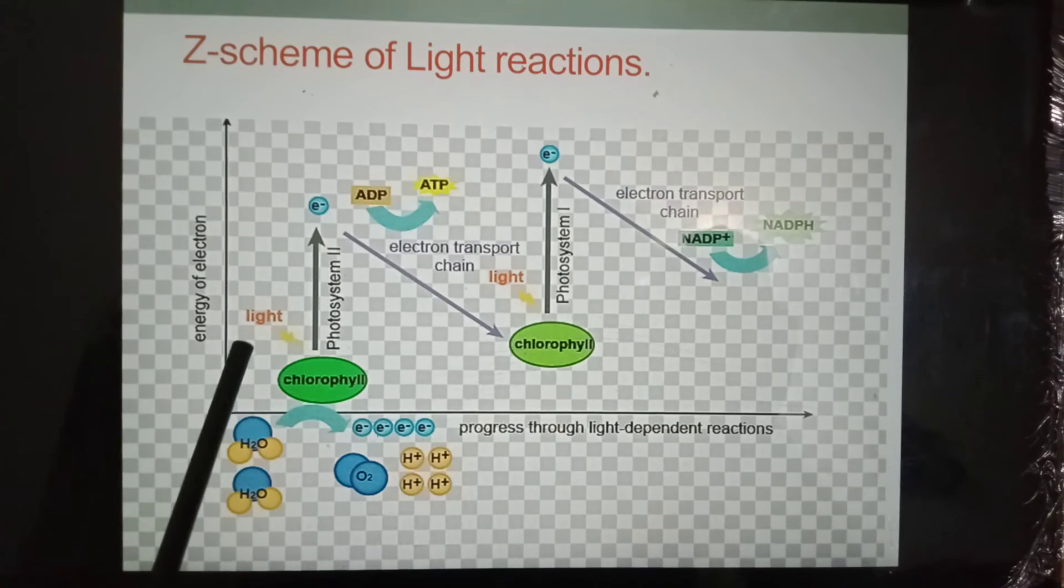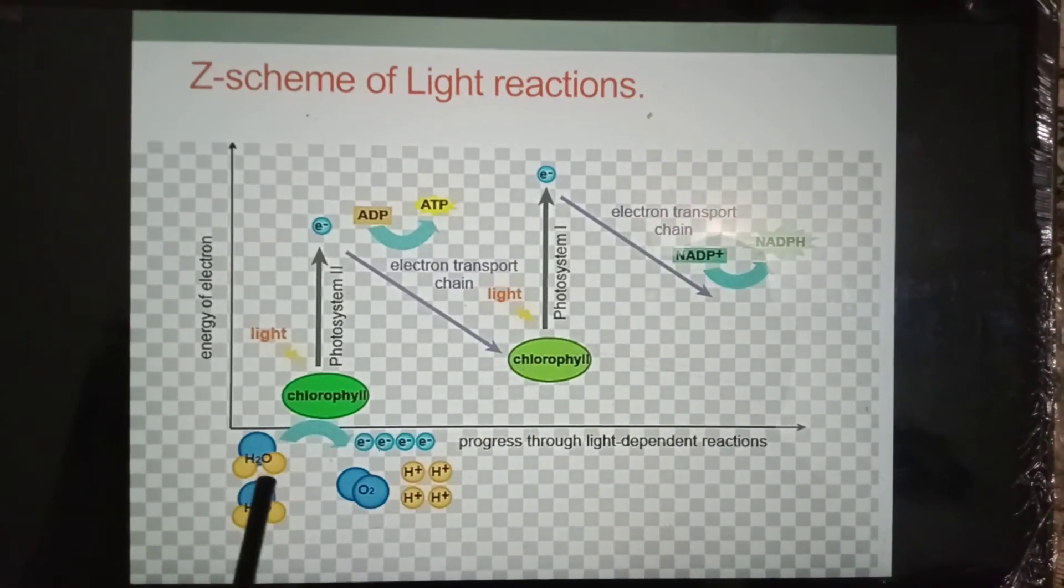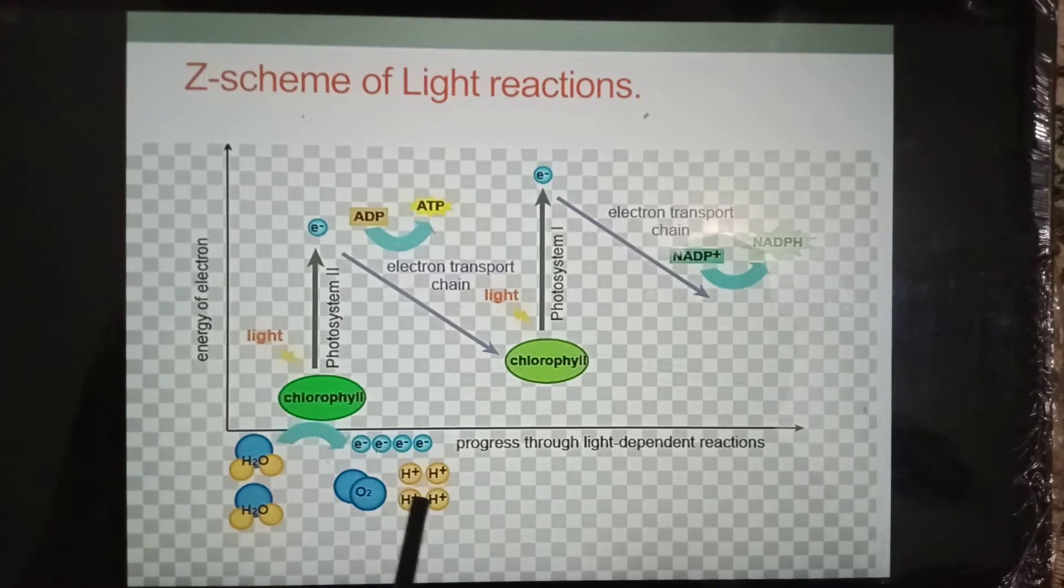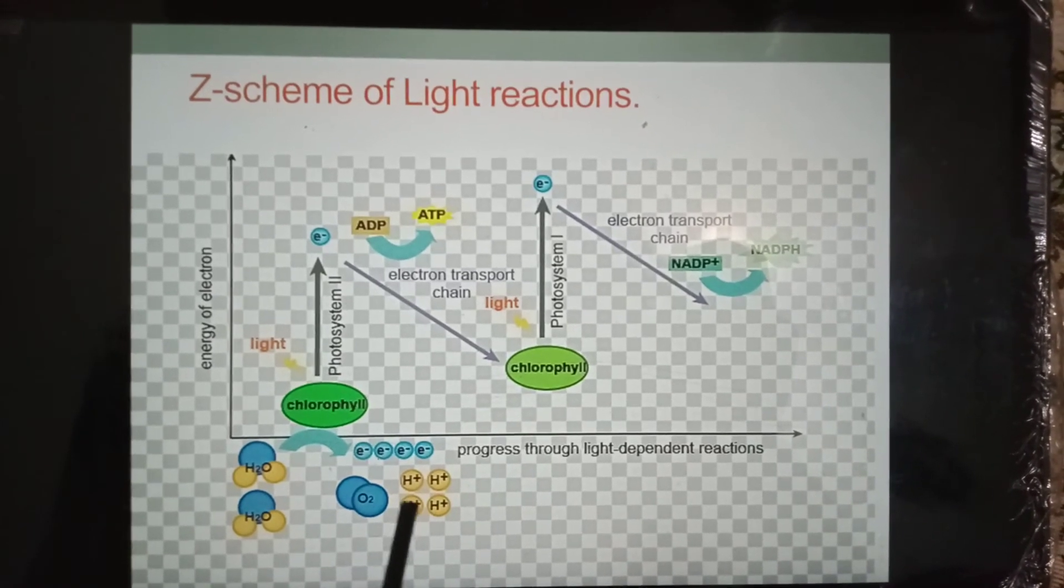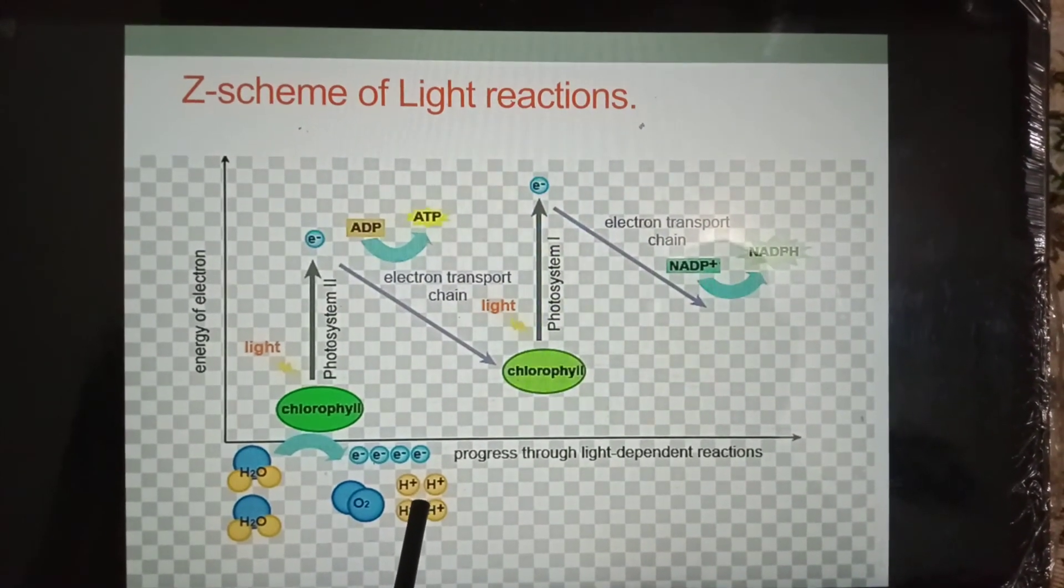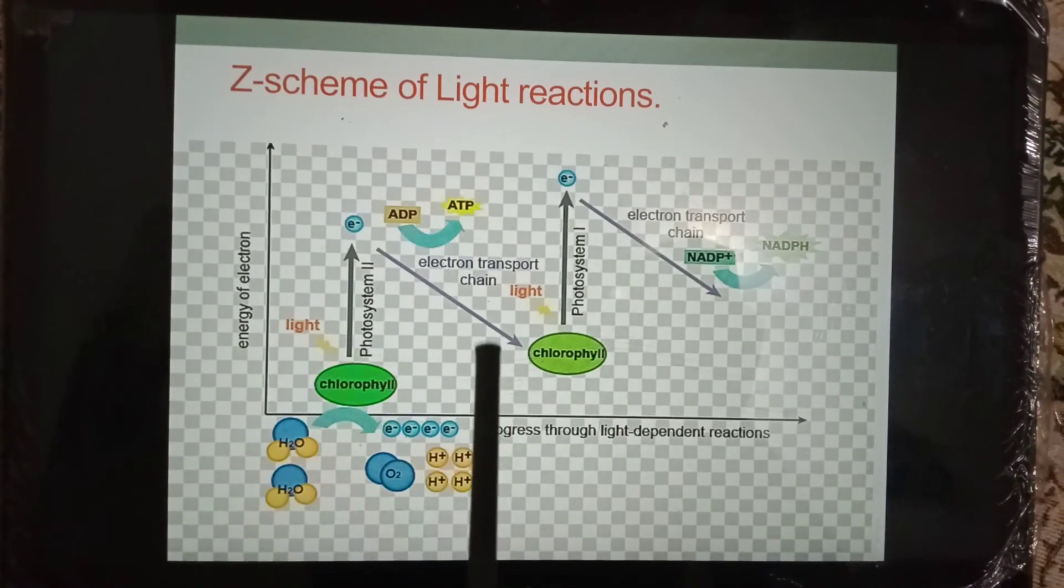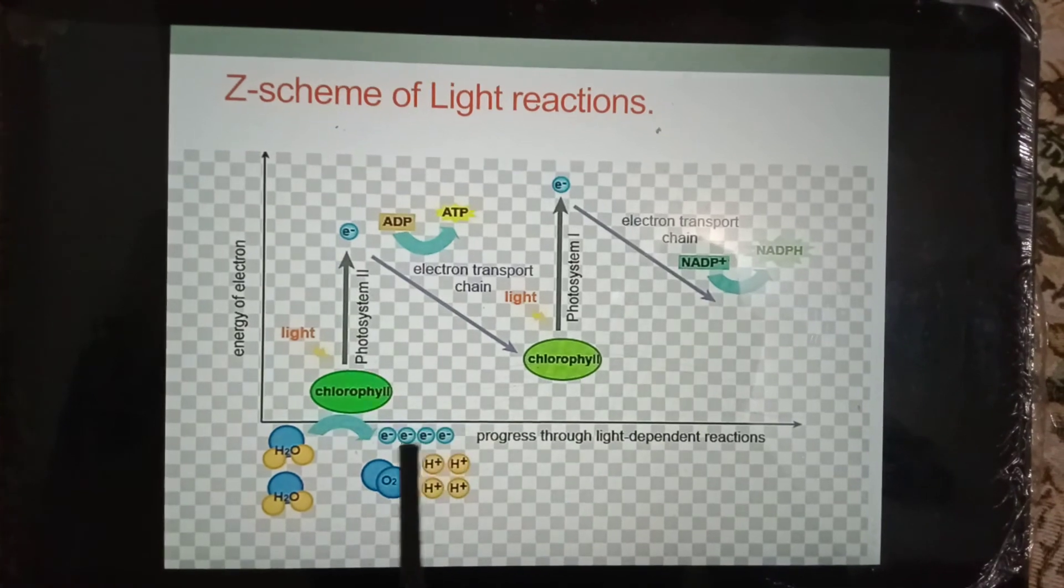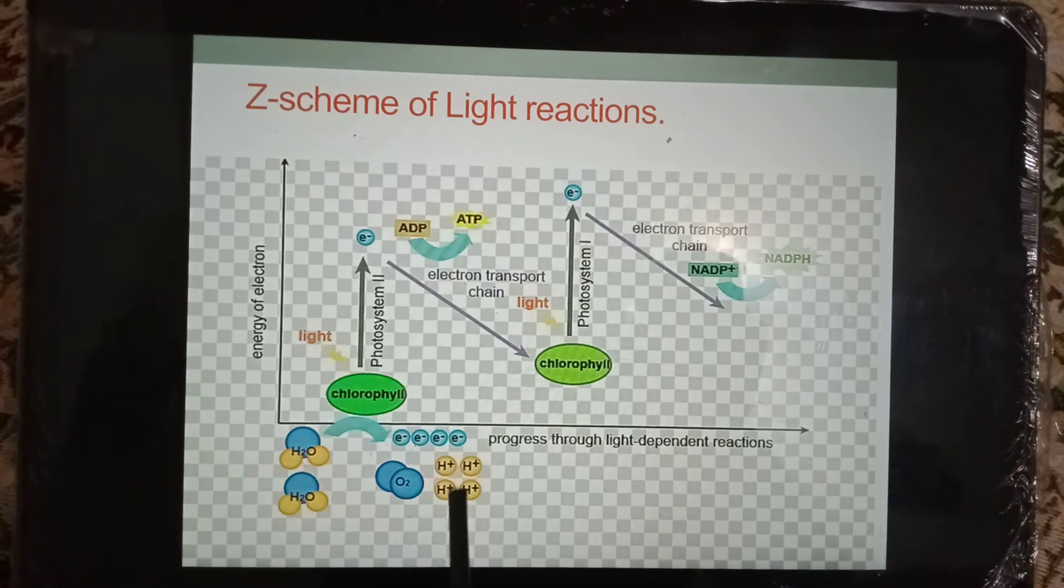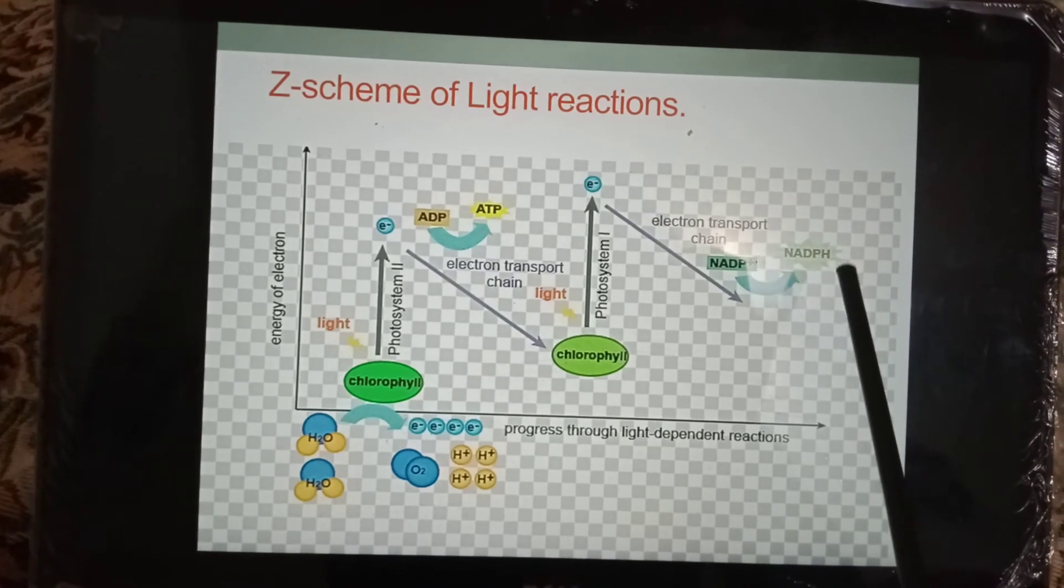This light energy also breaks water molecules, i.e., photolysis, and oxygen is released. The hydrogen atoms of water give electrons to chlorophyll molecules and become ions. The electrons of chlorophyll after the production of ATP and the hydrogen ions of water are used for the reduction of NADP+ into NADPH.